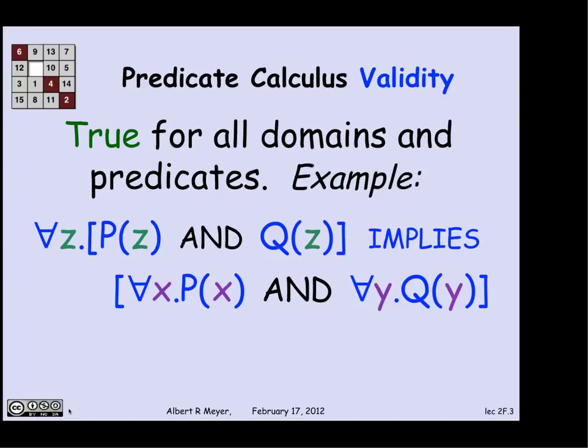Let's look at a concrete example to get a grip on this. Here is a valid formula of predicate calculus. It's mentioning predicates P and Q. It's of the form of a proposition,